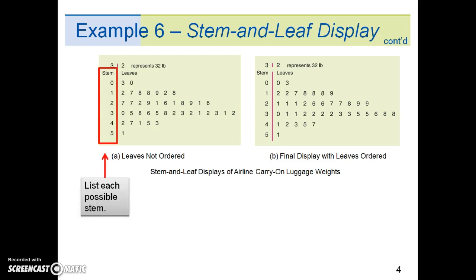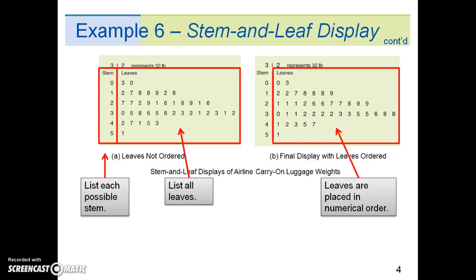In the stem-and-leaf display, we list each possible stem once on the left, and all its leaves in the same row on the right. Finally, we order the leaves in numerical order.